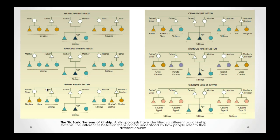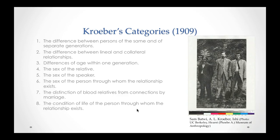Some of these differences can be based on matrilineal or patrilineal descent, or any of the other multilineal descent systems. This really influences the terminology we use and also the relationships, because like we just said, they are related. Kroeber then went on to outline eight rules describing kinship relationships and what kinship terminology means.